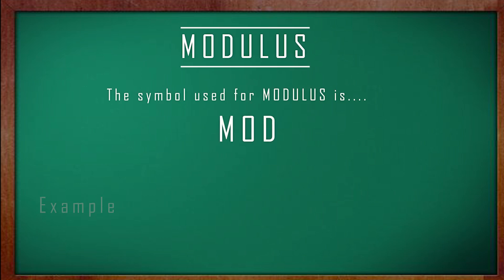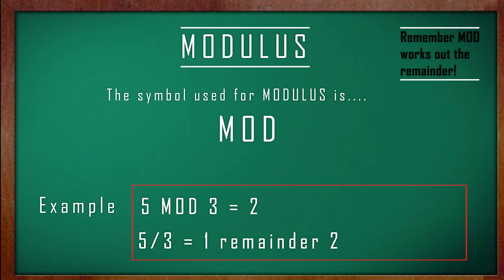Next up is modulus. Now modulus is used to calculate the remainder. The symbol used is MOD. For example, 5 MOD 3 is 2. That's because 3 goes into 5 once, leaving us with a remainder of 2.